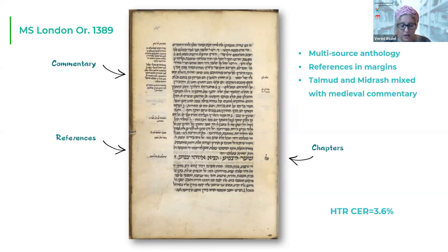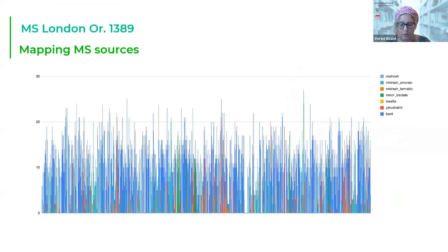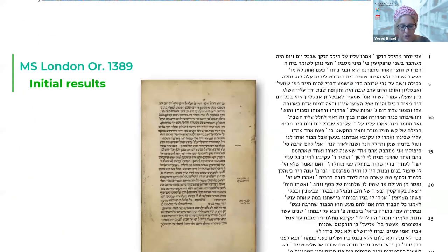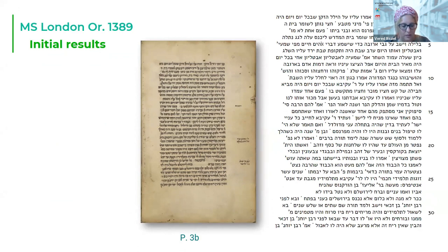We began the process by HTR in the manuscript through eScriptorium with satisfactory outcomes. The character error rate of 3.6% reflects the high error rate in marginalia transcription, while the main text HTR includes few errors. The results of the source analysis itself, however, were of mixed quality. At first sight, they confirmed the dominance of the Babylonian Talmud as the main source from which the manuscript draws its materials.